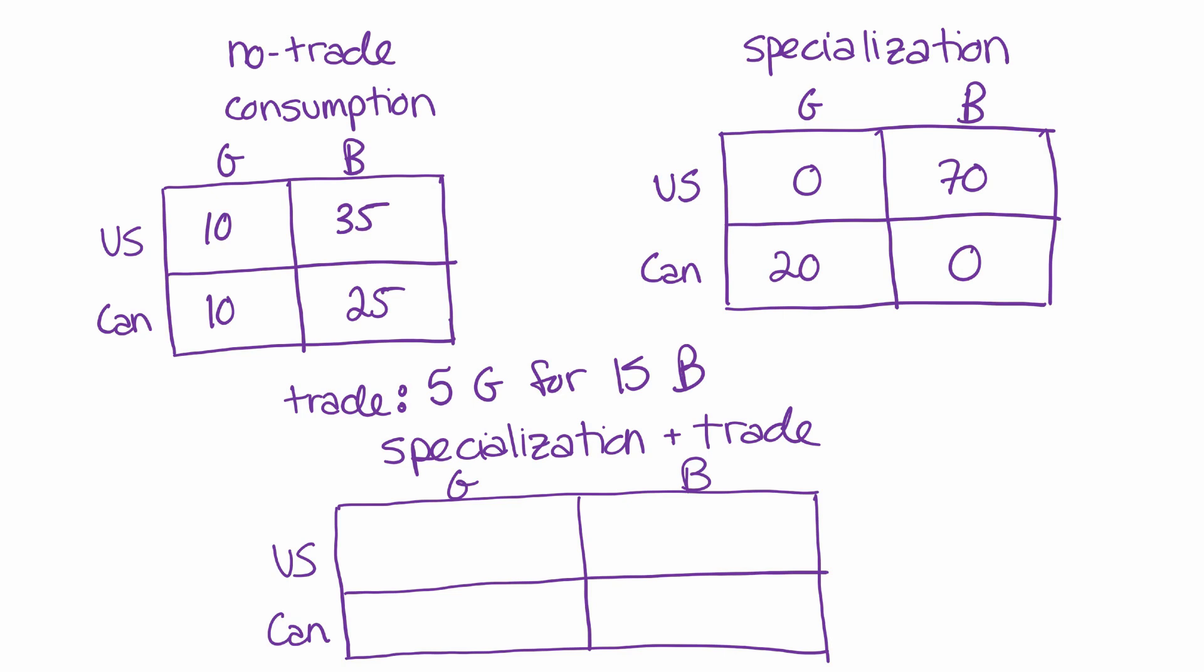For the US, they're going to start with zero guns and they're going to be receiving some number of guns. Canada is going to be the one exporting the guns, so they're going to start with 20 guns and give up some. The US is going to be exporting the butter, so they're going to start with 70 butter and be giving up some butter. Canada is not making any butter, so they are going to be on the receiving end of the butter. And it's important to remember here that when we're trading, you not only have to add the number to the party receiving the item, but you have to subtract it from the party exporting or giving up the item.